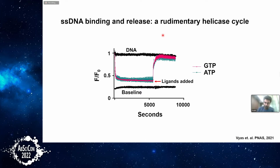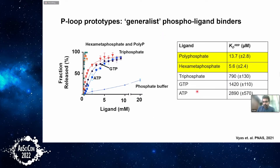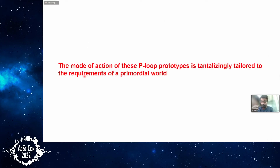Most interesting: inorganic polyphosphate — long-chain polyphosphate — and hexametaphosphate, a cyclic form of phosphate, were the most efficient in releasing proteins from DNA. Just 5.6 micromolar of hexametaphosphate can release almost 50% of proteins bound to DNA, whereas ATP requires almost 3 millimolar to have the same effect. These primordial proteins bind favorably to inorganic polyphosphate, which has also been proposed as the ancient precursor of NTPs, suggesting the mode of action of these prototypes is quite tailored to the needs of the primordial world.